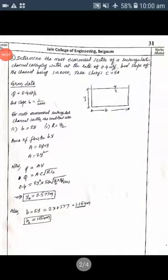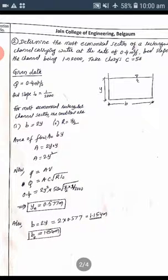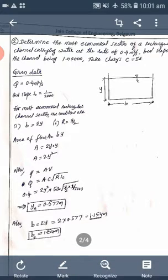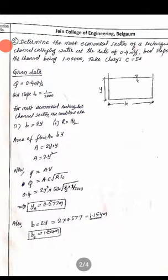In this example, determine the most economical section of a rectangular channel carrying water at the rate of 0.4 m³ per second. The bed slope of the channel is 1 in 2000. Take Chezy's constant C as 50. The data given are: discharge Q = 0.4 m³/s, bed slope = 1/2000, and C = 50. Draw the rectangular geometry and mark the width B and depth of flow Y.